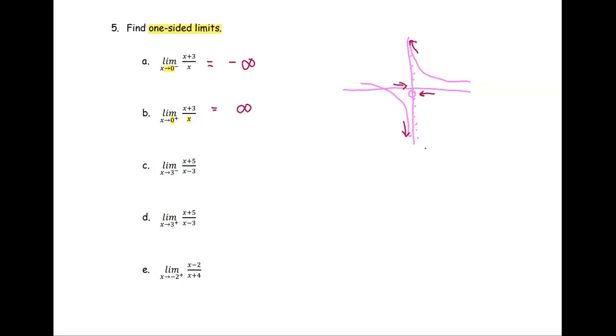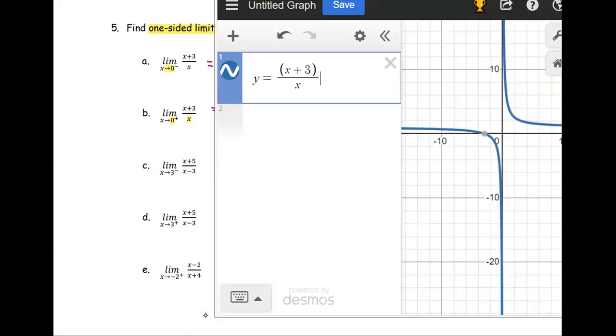Next, part c and d use the same function. Let me go back to Desmos and put another function graph. Y equals quantity x plus 5, all divided by the quantity x minus 3.